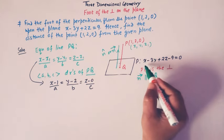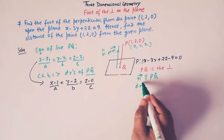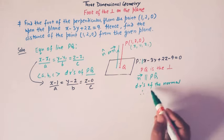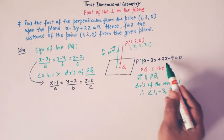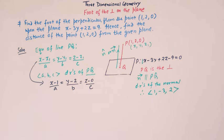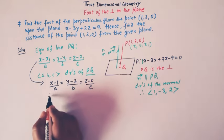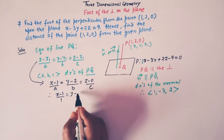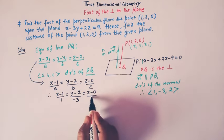From the equation of the plane, we know that the coefficients of x, y and z give the direction ratios of the normal. So therefore, the direction ratios of the normal are 1, minus 3, and 2. And we know that whenever two vectors are parallel, their direction ratios are proportional. So therefore, A, B, and C can be replaced by 1, minus 3, and 2. The equation of this line PQ is given by: (x minus 1)/1 = (y minus 2)/(minus 3) = (z minus 0)/2.